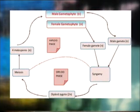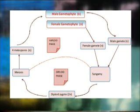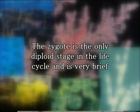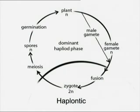Once these gametes are formed, they fuse to form the diploid zygote by a process called fertilization. This zygote after its formation undergoes meiosis to produce four haploid cells or spores which develop into gametophytic individuals. The zygote is the only diploid stage in the life cycle and is very brief. Thus, the long dominant haploid gametophytic phase alternates with a brief zygote or sporophytic diploid phase.